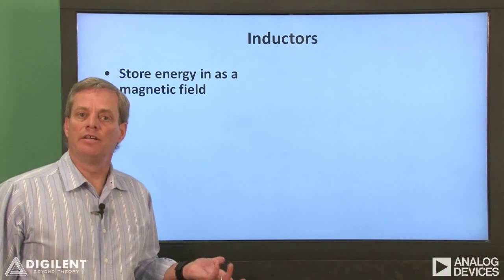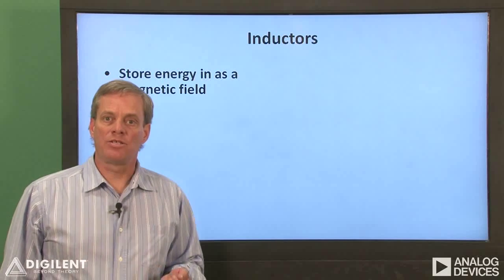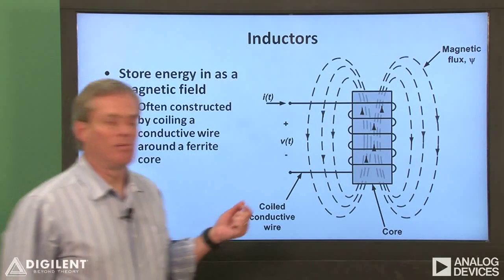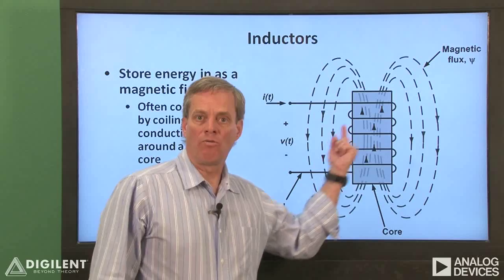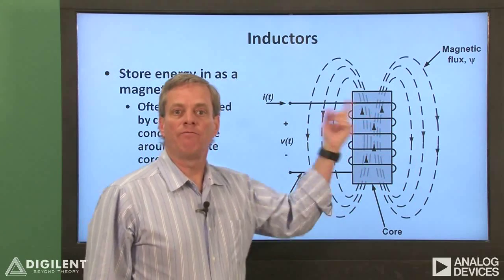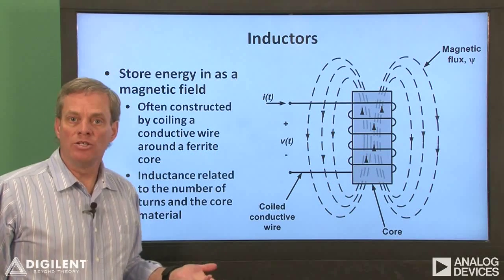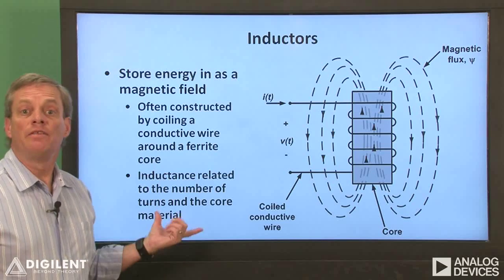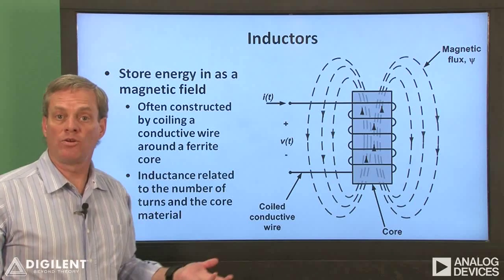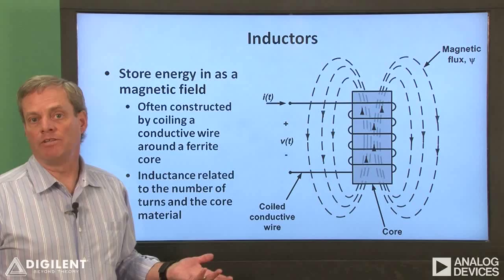Now let's talk about inductors. Like capacitors, inductors store electrical energy, but unlike capacitors, inductors store energy in a magnetic field. Typical inductors are constructed by winding a conductive wire around a central core. When current runs through the coil, a magnetic field is created. The inductance is indicative of the amount of energy that can be stored, and is typically related to the number of turns around the central core and the core material. Ferrite core materials typically result in relatively high inductance.